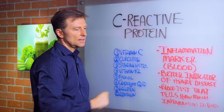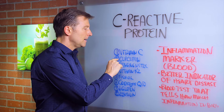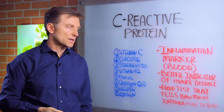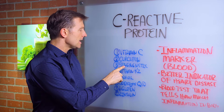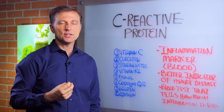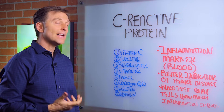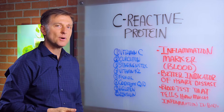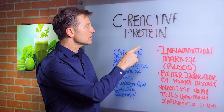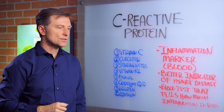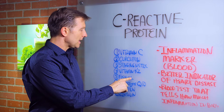Curcumin — that's turmeric, a spice you can consume. You can get it as a powder, supplement, or use it on your foods. That's a very powerful way to lower C-reactive protein. And then stinging nettle root — that's another plant you can get as a supplement, and it's one of the most powerful anti-inflammatories I know. Vitamin K2 will also help lower that, and it removes calcium from the arteries, cleaning out the plaquing.